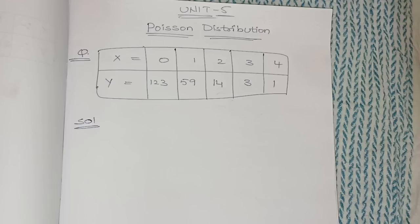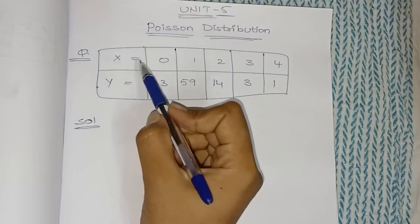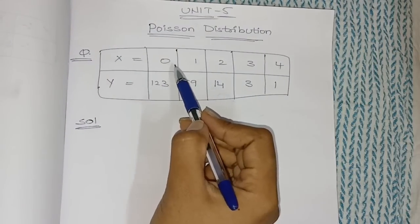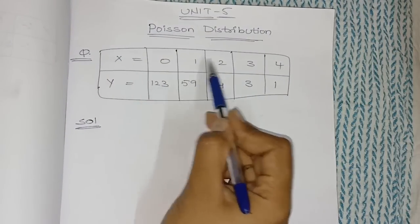Don't skip the video and watch till the end — then only you can easily understand Poisson distribution. Just watch this video and make a note of whatever I am saying. Here in Poisson distribution, a table is given with x values 0, 1, 2, 3, 4 and y values 123, 59, 14, 3, 1.